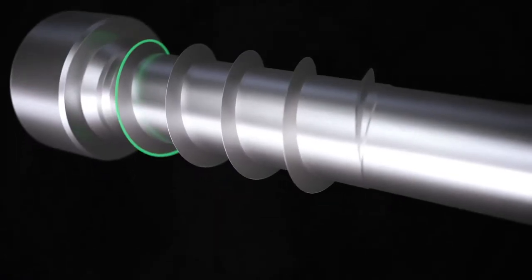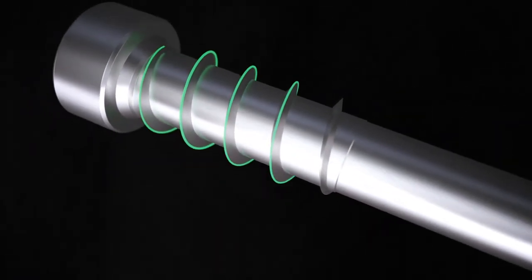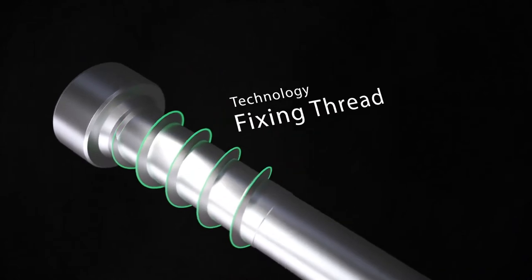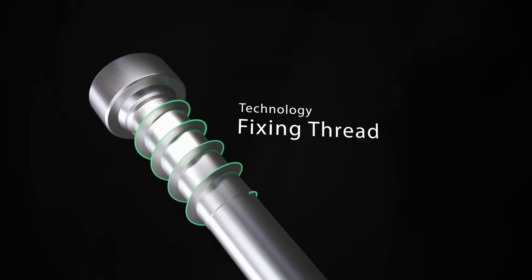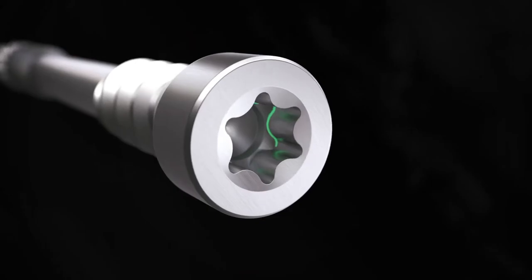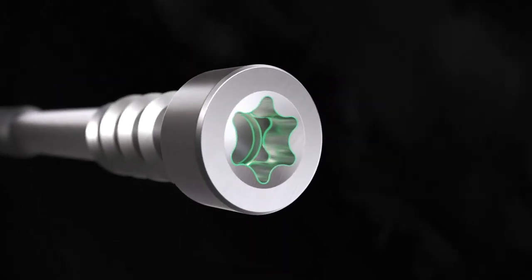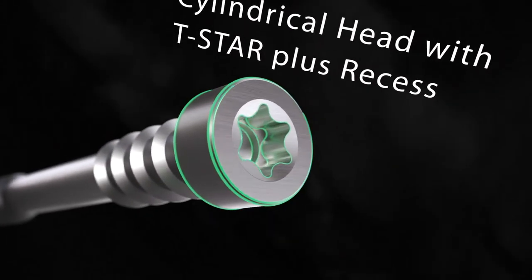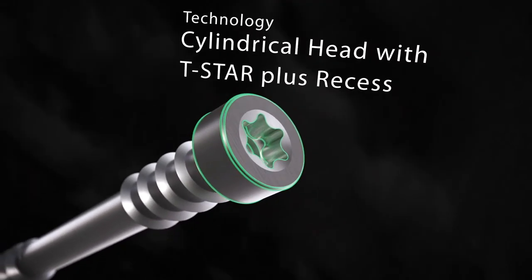Imagine a screw that doesn't rely on the head to hold the boards down. A double-thread technology fixes and locks the board securely in place. A small, low-impact cylindrical head with a drive recess that enables the bit to apply maximum force transmission.